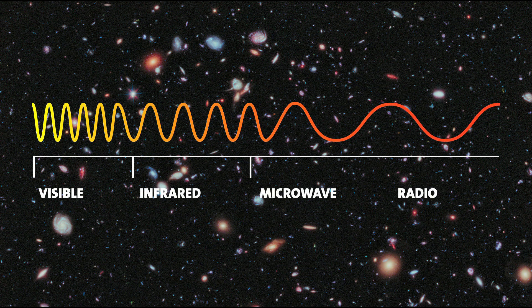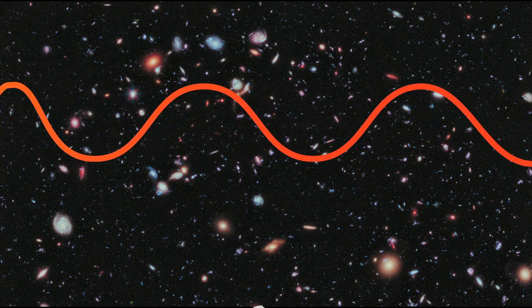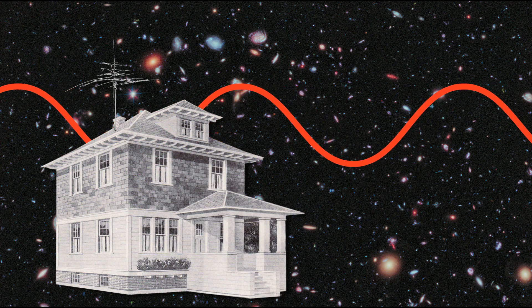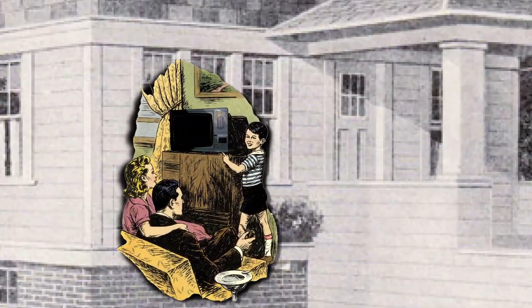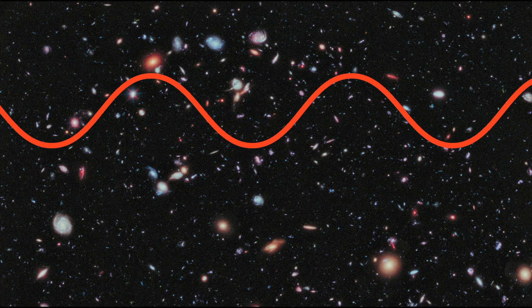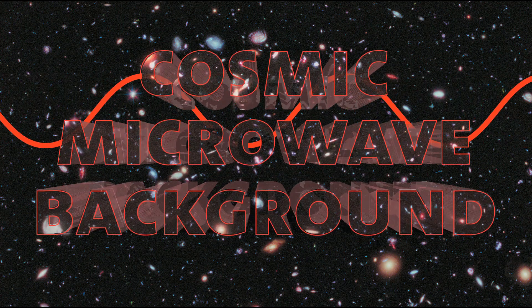Radio waves pervading the universe can be detected with a microwave antenna. Heck, they can be detected with a TV antenna. An old-style, on-the-air TV - a few percent of the noise that you get when you tune to an empty channel was from the early universe. Those radio waves are what we call the cosmic microwave background.